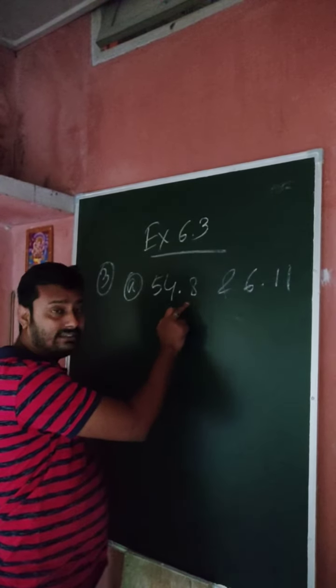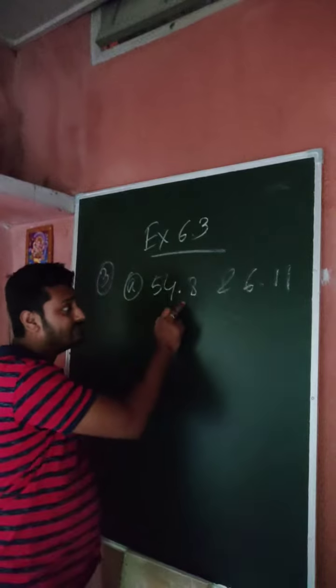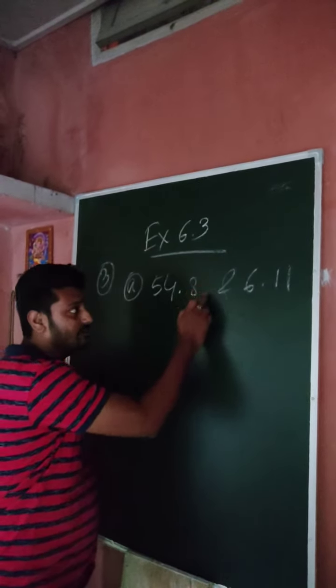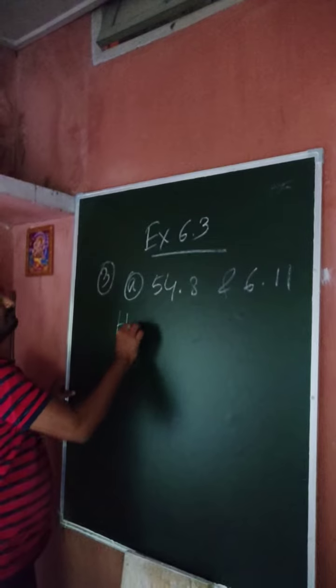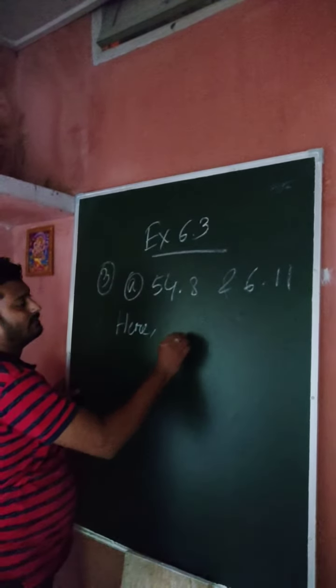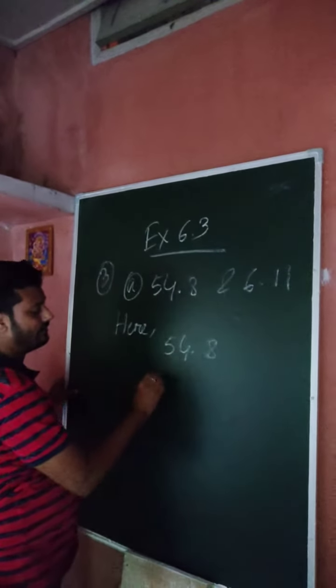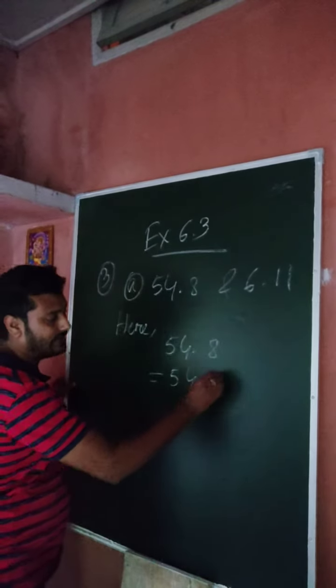In this case, one decimal. In this case, two decimals. So, how many decimals are required? One. So, you just put a zero here. So, here, 54.8. You can write like 54.80.